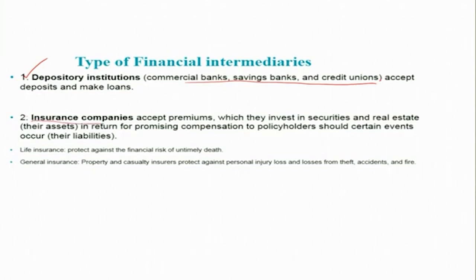Insurance companies are another type of financial intermediary. They accept premiums, which they invest in securities and real estate, in return for promising compensation to policyholders should certain events occur. Broadly, there are two types: life insurance companies, which protect against the financial risk of untimely death, and general insurance companies, which protect against property and casualty — personal injury, theft, accidents, and fire.